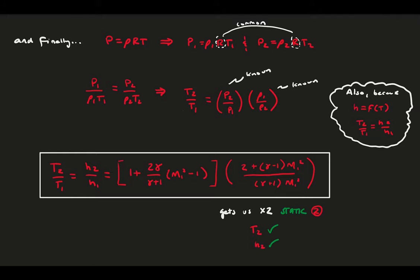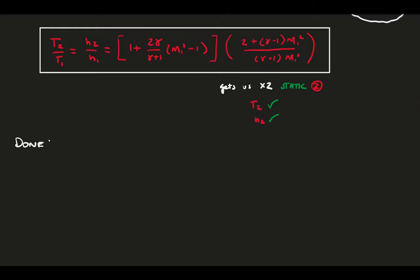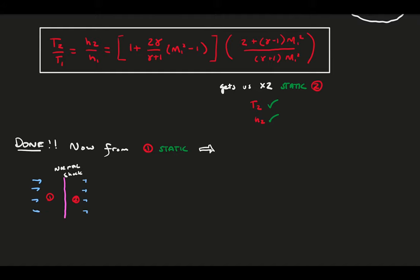And that's it. With this arrangement of equations, we know almost everything. We know the static variables at point 1 because they're given, and we have general equations for the stagnation and sonic conditions at point 1. With these new normal shock equations, we have the static conditions at point 2, which are specific to a normal shock. From there, you could also calculate the sonic and stagnation conditions downstream of the shock.